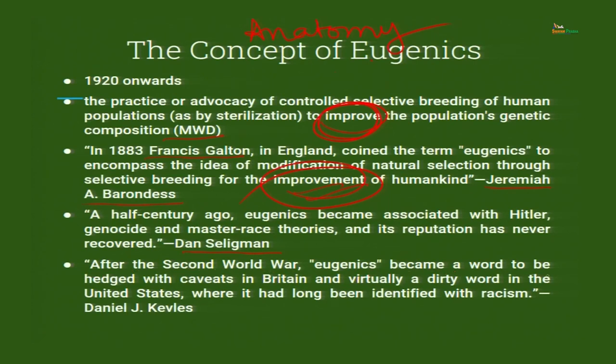Eugenics comes packaged like a rosy thought, but what people were made to understand was only the tip of an iceberg — one-tenth floating above water while the dangerous nine-tenths remain submerged, calling for people to kill other people. After the Second World War, eugenics became a word to be hedged with caveats in Britain and virtually a dirty word in the United States, where it had long been identified with racism.